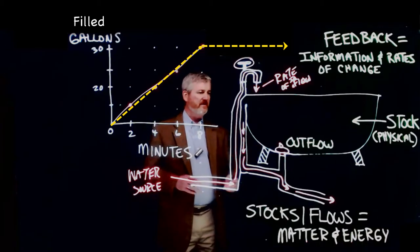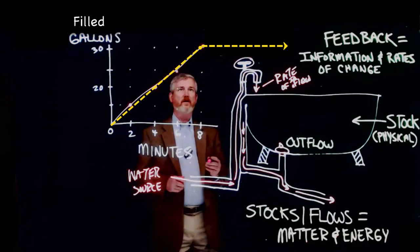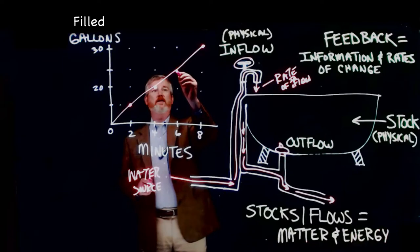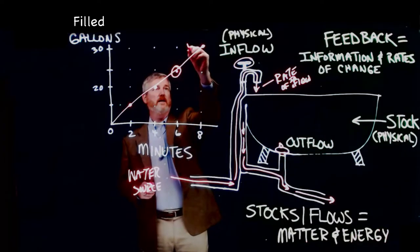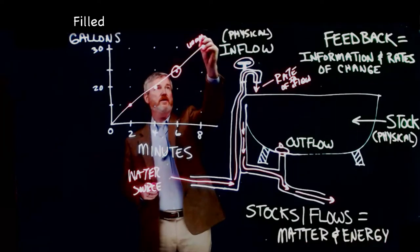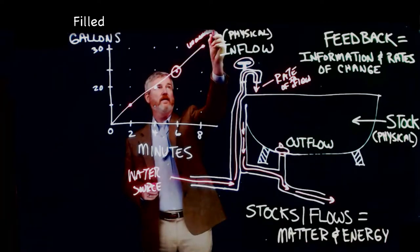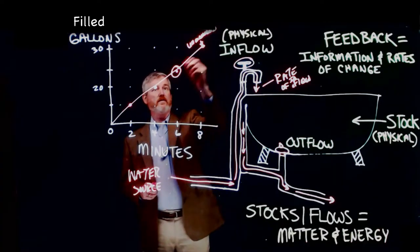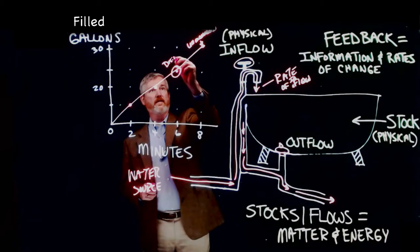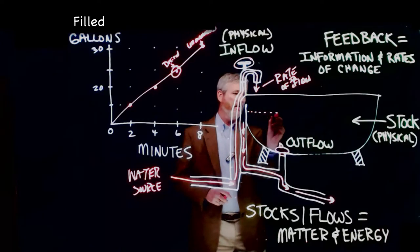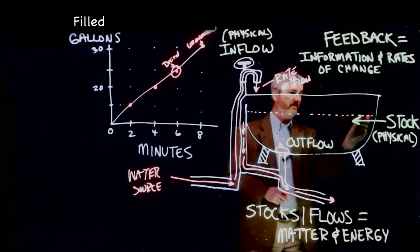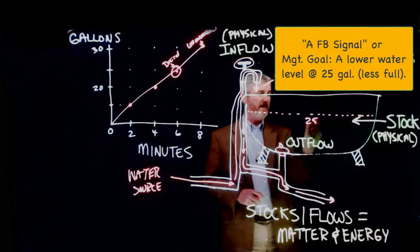So at this point, let's say we're looking for a desired goal of 25 gallons instead of our original unmanaged 30 gallon goal here. This is desired. So we're going to go for 25 gallons right across here.